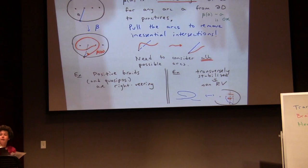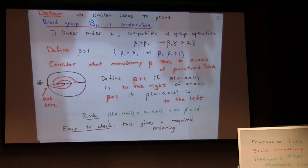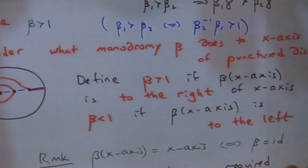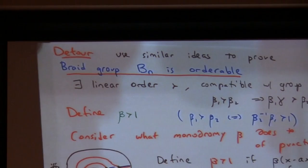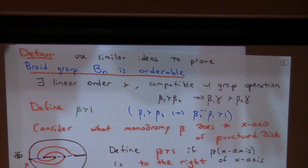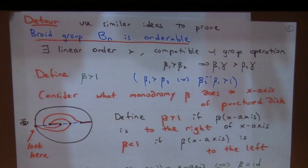Now I want to make a detour to talk about orderings on the braid group, for two reasons: it's related to right-veering, and it will play a major role in the proof of my theorem. You can use the idea of right-veering to prove the nice fact that the braid group is orderable — meaning there is a linear order compatible with the group operation, specifically right-invariant: if β₁ > β₂ then β₁γ > β₂γ.